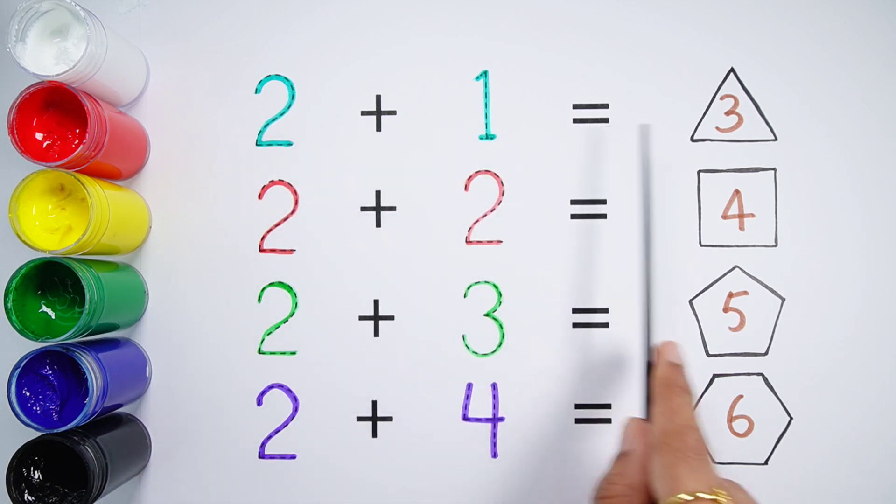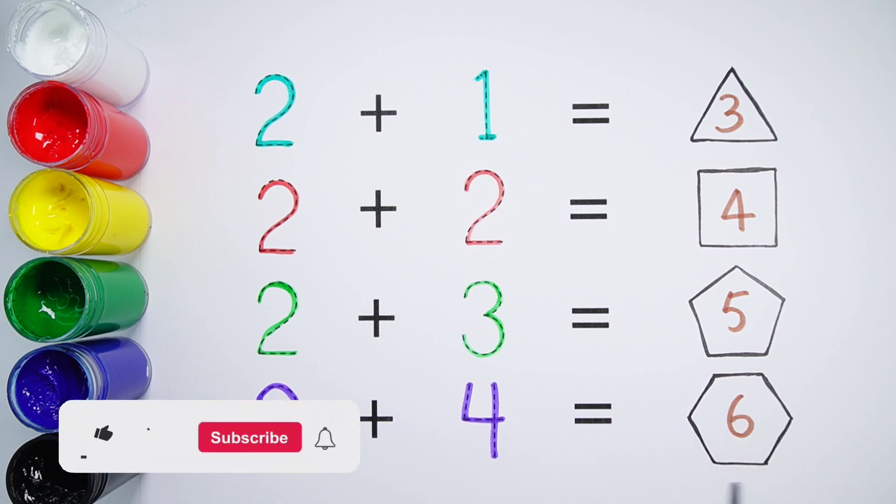2 plus 1 equals 3, a 3-sided triangle. 2 plus 2 equals 4, a 4-sided square. 2 plus 3 equals 5, a 5-sided pentagon. 2 plus 4 equals 6, a 6-sided hexagon.